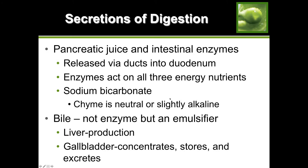Pancreatic juice and intestinal enzymes are released via ducts into the duodenum - the first segment of the small intestine. The enzymes act on all three energy nutrients: fats, carbs, and proteins. Through the pancreatic juice you also get sodium bicarbonate to neutralize the acidic chyme, making it slightly alkaline. The bile released into the small intestine is not an enzyme but an emulsifier - it helps mix water with oil.